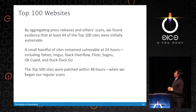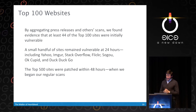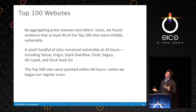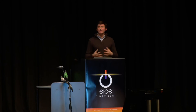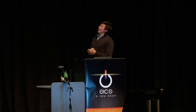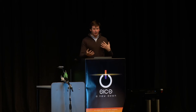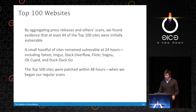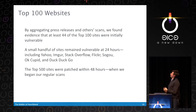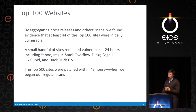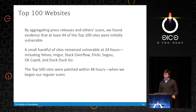The top 100 websites did fairly well at patching. All of the top 500 websites were patched within the first 48 hours of our scanning. By aggregating press releases and reporter responses, we found that about 44 of the top 100 websites were initially vulnerable. A handful remained vulnerable at 24 hours, including Yahoo, Imgur, and Stack Overflow — sites where we saw active attacks in the wild, with people stealing Yahoo Mail credentials 24 hours after the vulnerability was released. Within 48 hours, all had been patched.